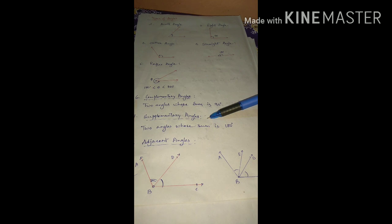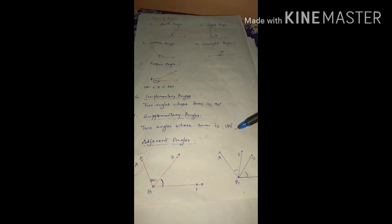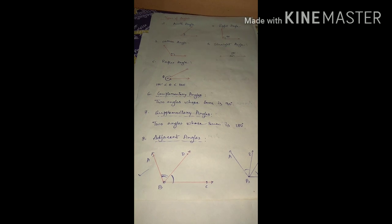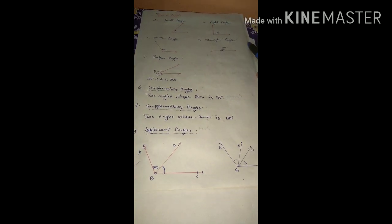Next, number seven: supplementary angles. Supplementary angles means if you add two angles and their sum is exactly 180 degrees, then those two angles are known as supplementary angles.